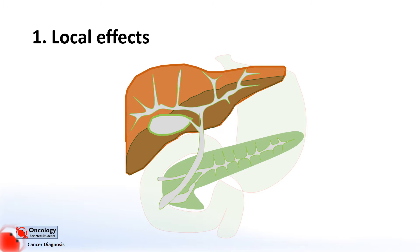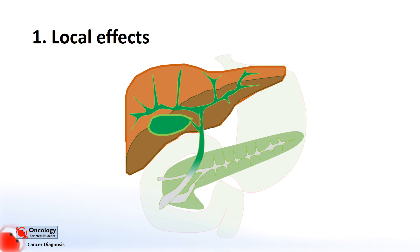Bile also serves another function, and that's in the excretion of something called bilirubin. Bilirubin is a product of the breakdown of blood cells, and basically the liver puts this into the bile and excretes it into the gut. As we can see here, the bile is draining from the liver through the bile ducts and then into the gut.